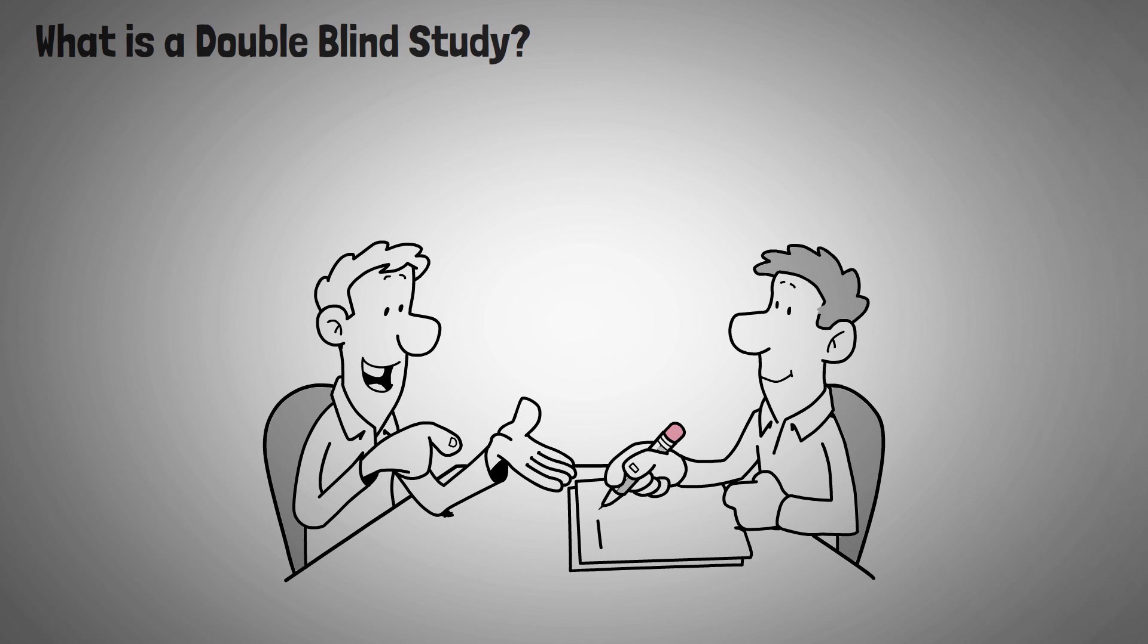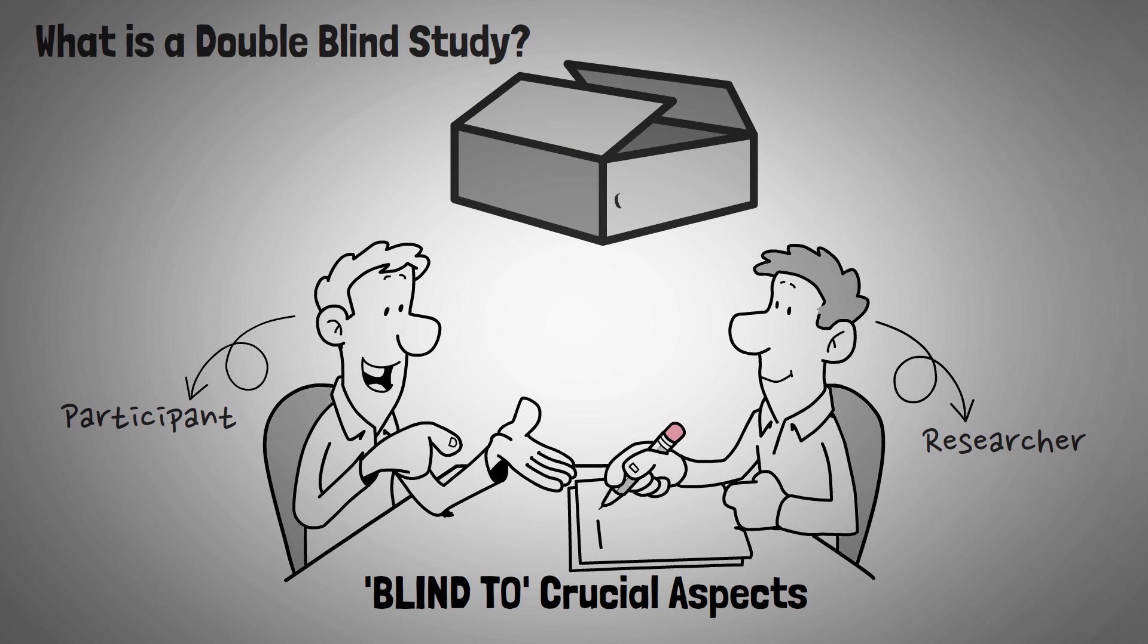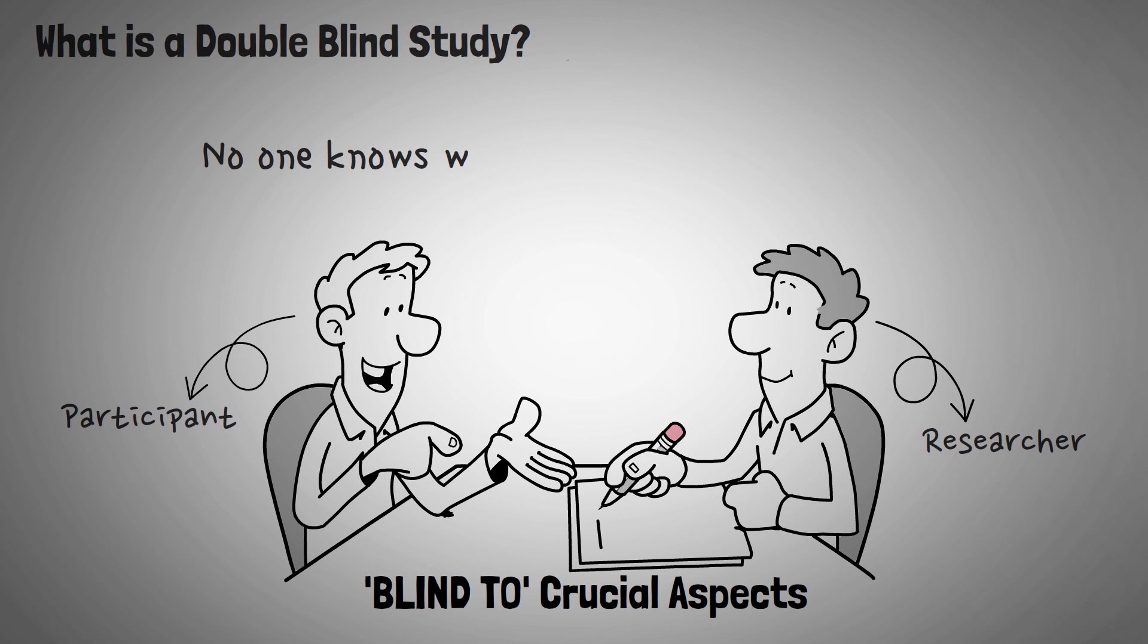First off, what is a double blind study? Well, a double blind study is an experiment where both researchers and the participants are blind to the crucial aspects of the study, such as the hypothesis, the expectations, or the allocations of subjects to different groups. In double blind clinical trials, neither the experimenters nor the participants are aware of who is receiving a treatment.